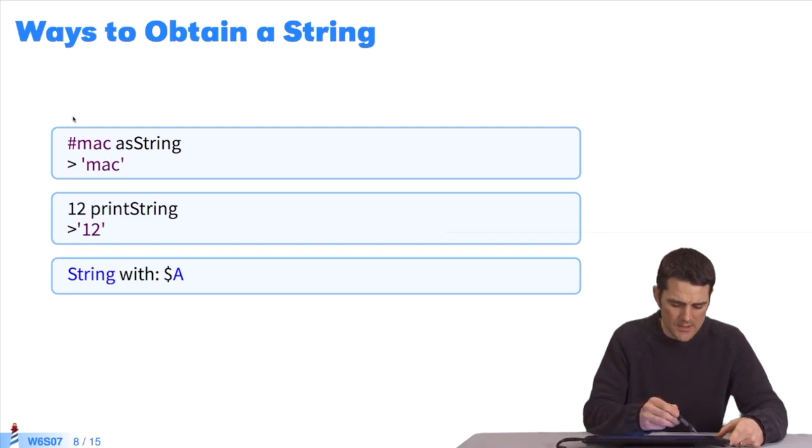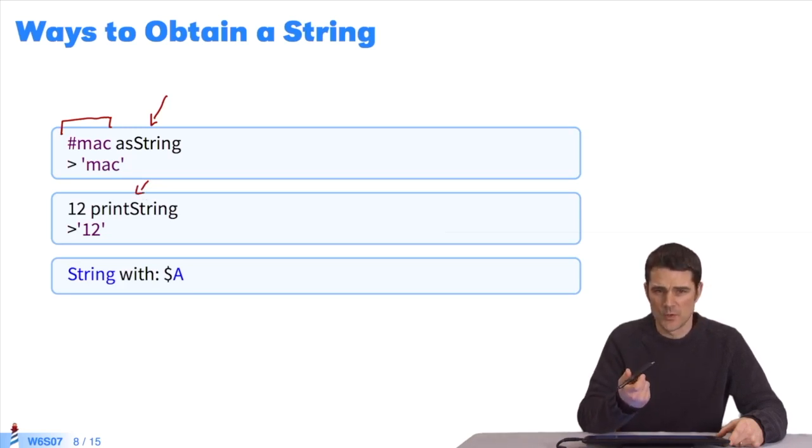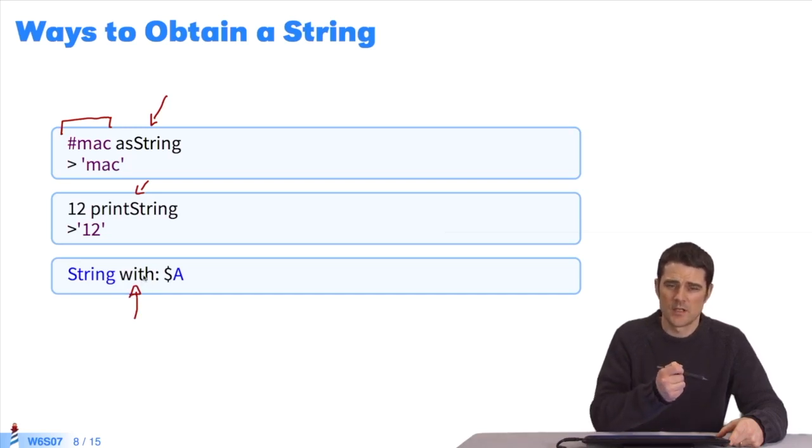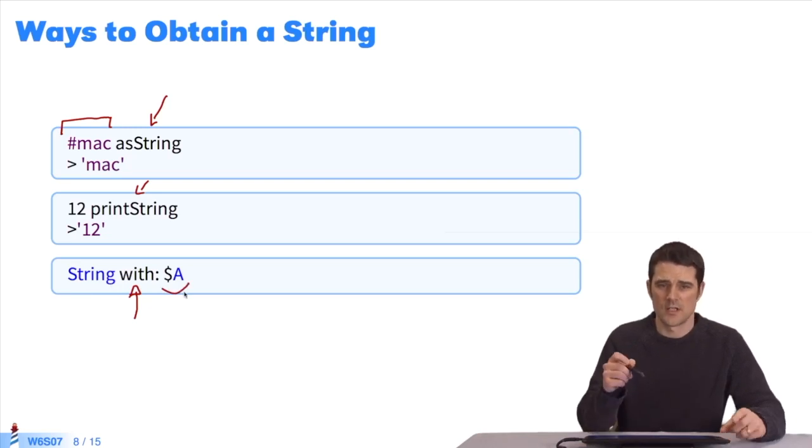To generate strings there are various techniques. The easiest one is the conversion method. I convert a symbol into a string of characters with as string or else I can send print string to any object. This will give me a string representation of the object. Or I can generate a creation method directly from a collection. Remember, you can send to any collection class to generate a new collection that automatically contains certain objects. If I use string with dollar sign a, I get a string that contains one single character a.